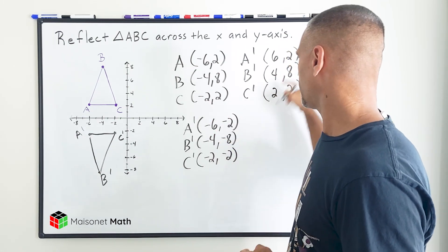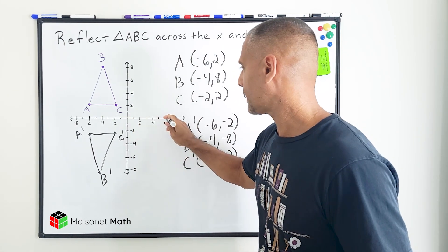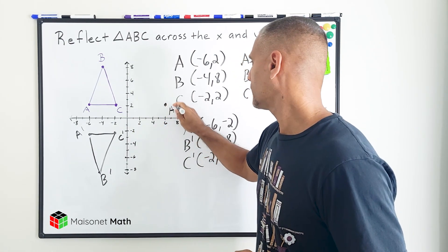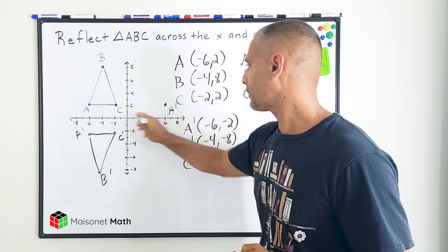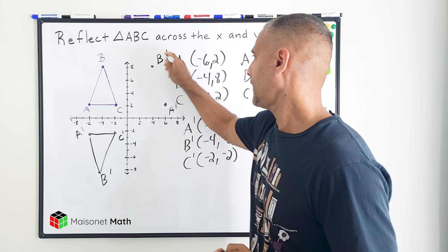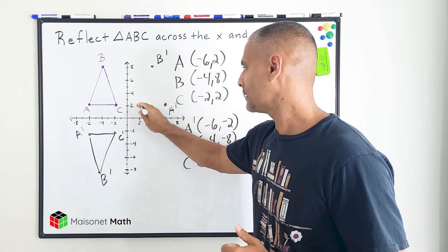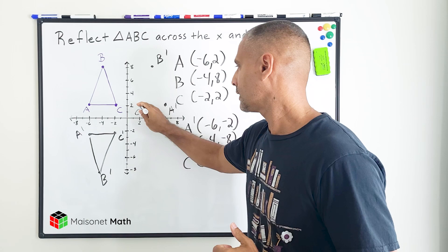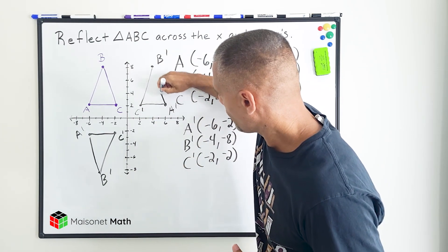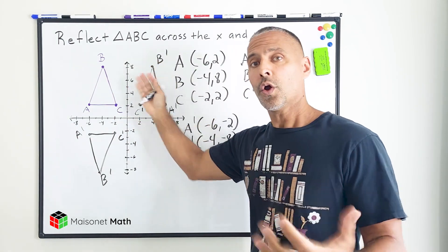So now we can go ahead and plot these points. A is now going to be at positive 6, positive 2. B is now located at positive 4, positive 8. And C is now located at positive 2, positive 2. So now we can visually see that we reflected this triangle across the y-axis.